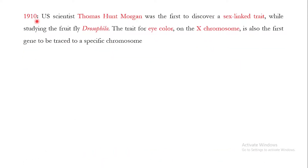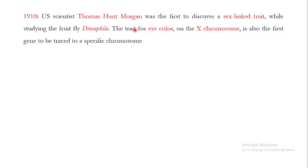In 1910, US scientist Thomas Hunt Morgan was the first to discover a sex-linked trait while studying the fruit fly Drosophila melanogaster. He found that the gene for eye color is present on the X chromosome — the first gene to be traced to a specific chromosome. He discovered that genes are present on chromosomes and was also the pioneer of sex-linked inheritance, showing that traits can be present on sex chromosomes.